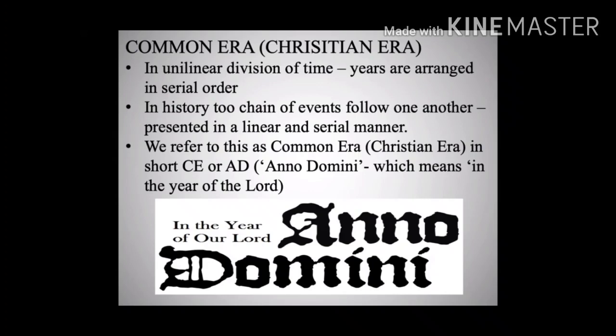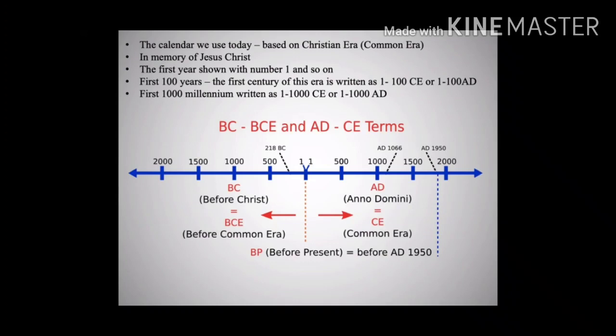We write Anno Domini, which means 'in the year of the Christian era.' The calendar we use today is based on the Christian era. This era began in the memory of Jesus Christ. The first year of this era is shown with the number 1. The years after that are indicated by the next number in serial order. The first 100 years, that is the first century of this era, is written as 100 CE or 1 to 100 AD.